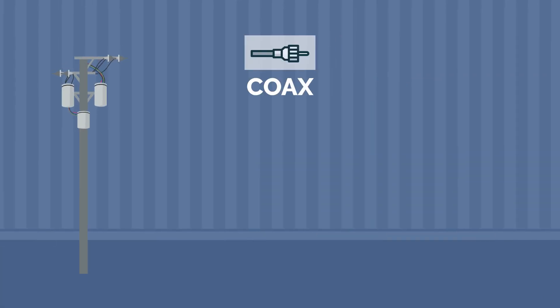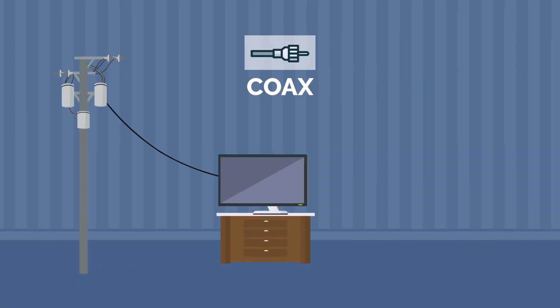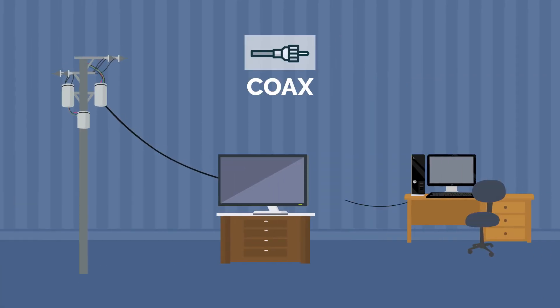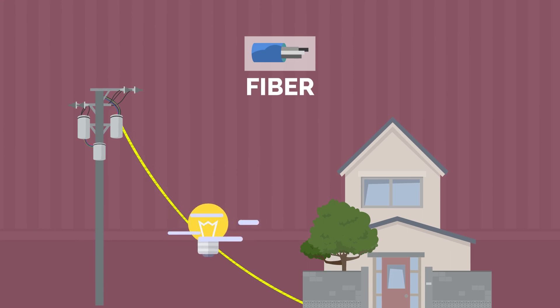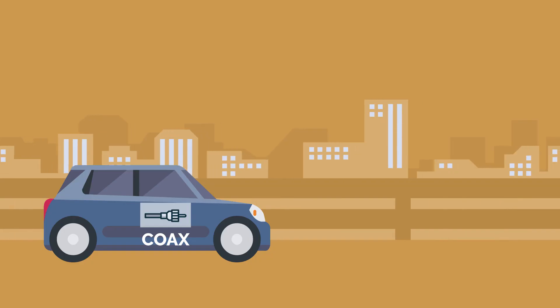Regular internet commonly uses the same type of coaxial cable your TV uses to transfer data through electricity. Fiber optic lines transfer data using modulated light instead of electricity, which allows it to have a much higher bandwidth capacity.